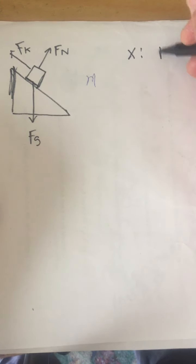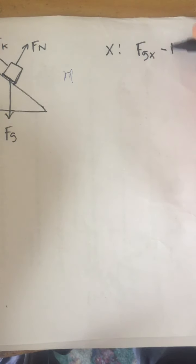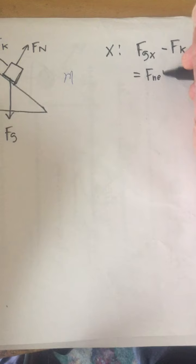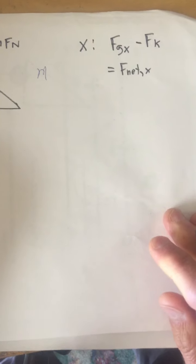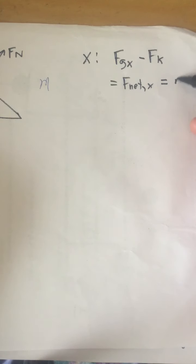So you're going to have Fgx just like you do in any block problem minus Fk. That's going to be equal to the net force in the x direction, which is also equal to the mass times the acceleration of the block in the x direction.